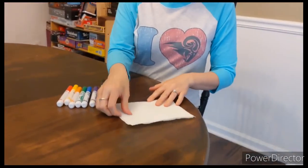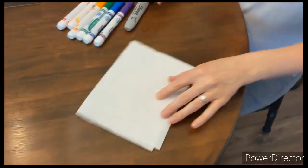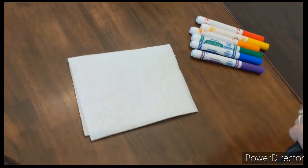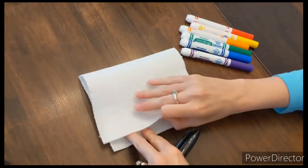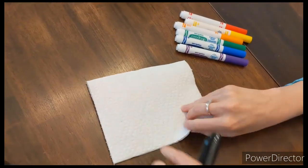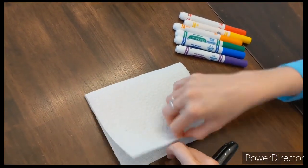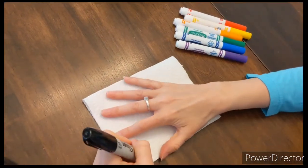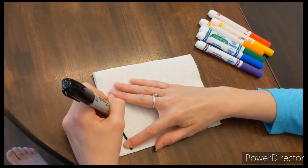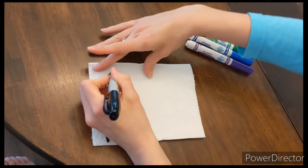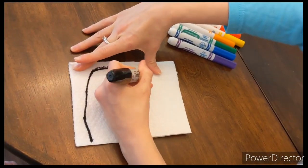Then we're going to draw a rainbow in black and make sure that you push down hard enough because you want it to bleed through to this side. Doesn't have to be perfect.